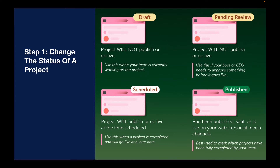Use the draft status when your team is working on a project — it will not publish in this state. Use pending review if your boss or CEO needs to approve something before it goes live — it will not publish in this state either.